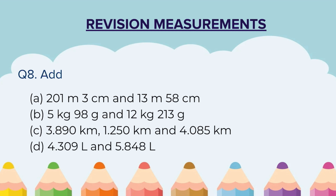Question 8: Add. 201 meters 3 centimeters and 13 meters 58 centimeters. You have to be careful about the number of digits in centimeters, and then write one below the other and add. Also: 3.890 kilometers, 1.250 kilometers and 4.085 kilometers. Last one: 4.309 liters and 5.848 liters. Remember to pause the video, solve these questions and then unpause and continue.